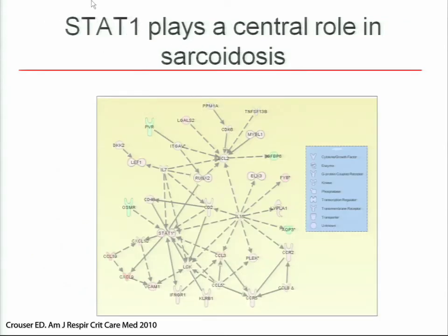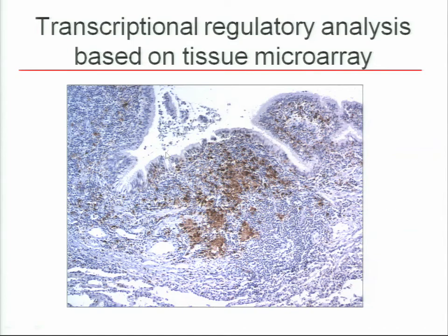We found that a transcription factor — something that dictates which recipe cards get written down — was the central dominant neighborhood involved in sarcoidosis. It's called STAT1. There are a lot of other genes, some of which we never suspected before, which give us candidates as targets in sarcoidosis. When you stain a lymph node for STAT1, you can see a lot of STAT1 brown staining there — and that kind of fit with what we already knew.